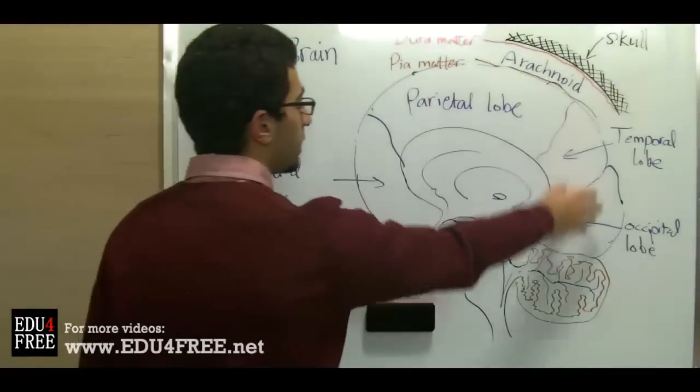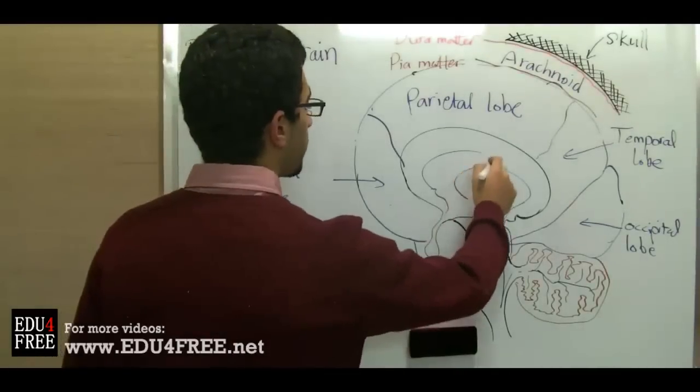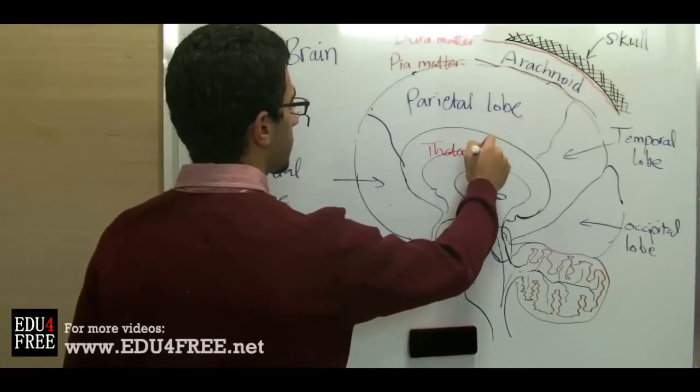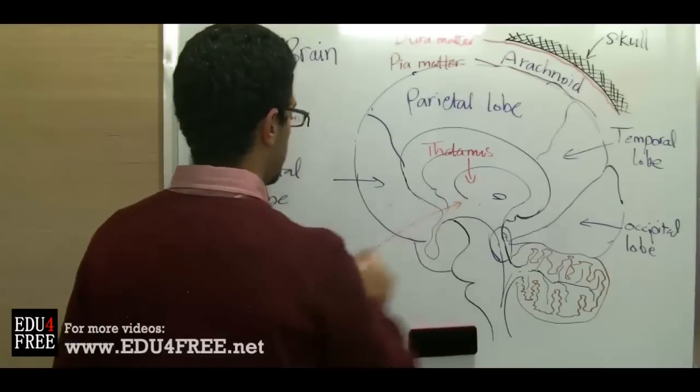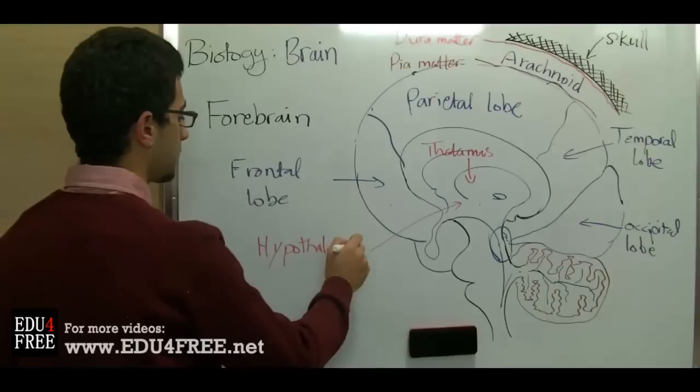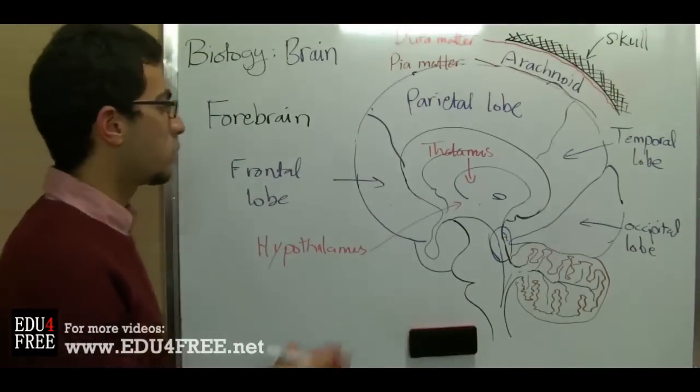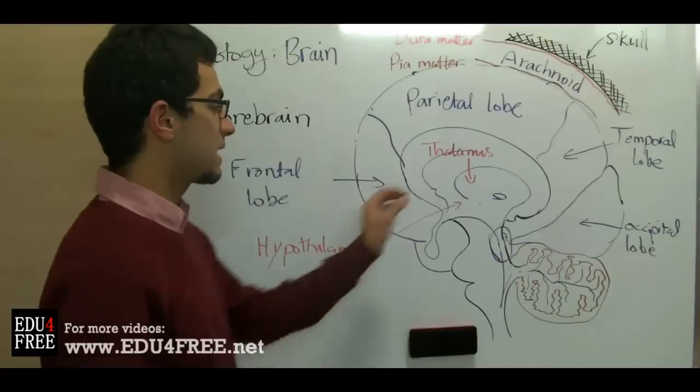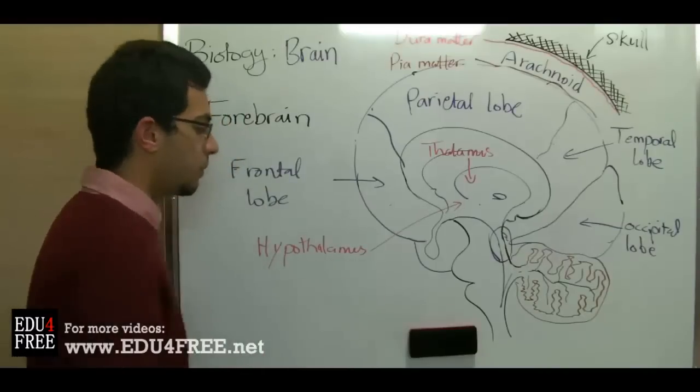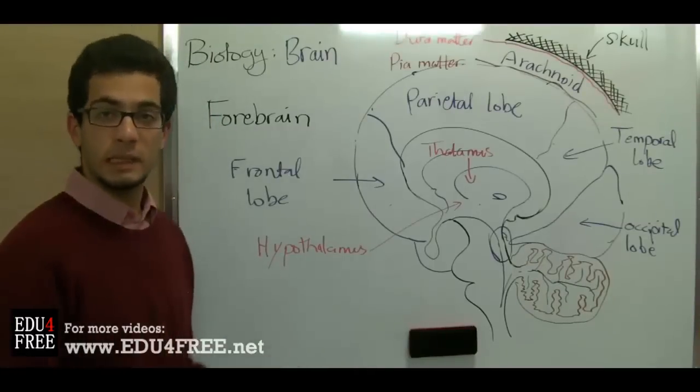Now we talk about the cortex, that part. Then we have the thalamus and the hypothalamus. The thalamus is a very important center of coordination between all the body functions, except for smell. The hypothalamus contains centers of different body needs like satiety, like thirst, like hunger, and it also contains centers of sleep.